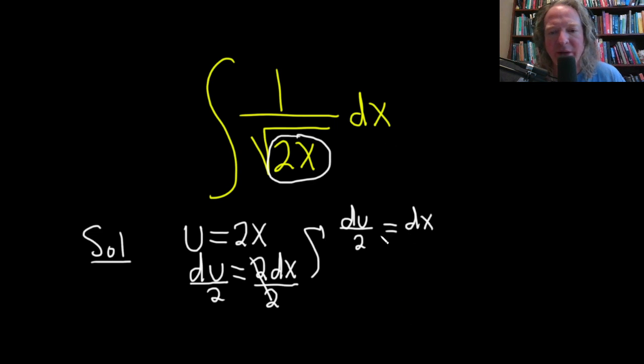And we can write this in a more convenient way. I'm going to write this as 1 half du equals dx.